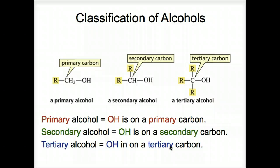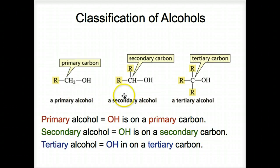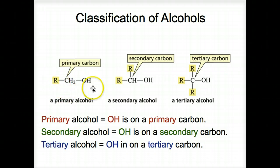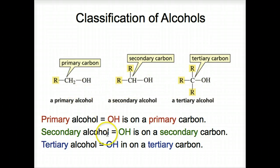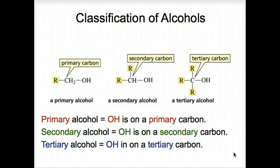Classification of alcohols. Just as with alkyl halides, alcohols can be classified as primary, secondary, or tertiary based on the nature of the carbon to which the OH is bonded. A primary carbon is bonded to only one other carbon; secondary has two R groups; tertiary has three R groups. These different classifications of alcohols have different properties and characteristics, including in reactions.